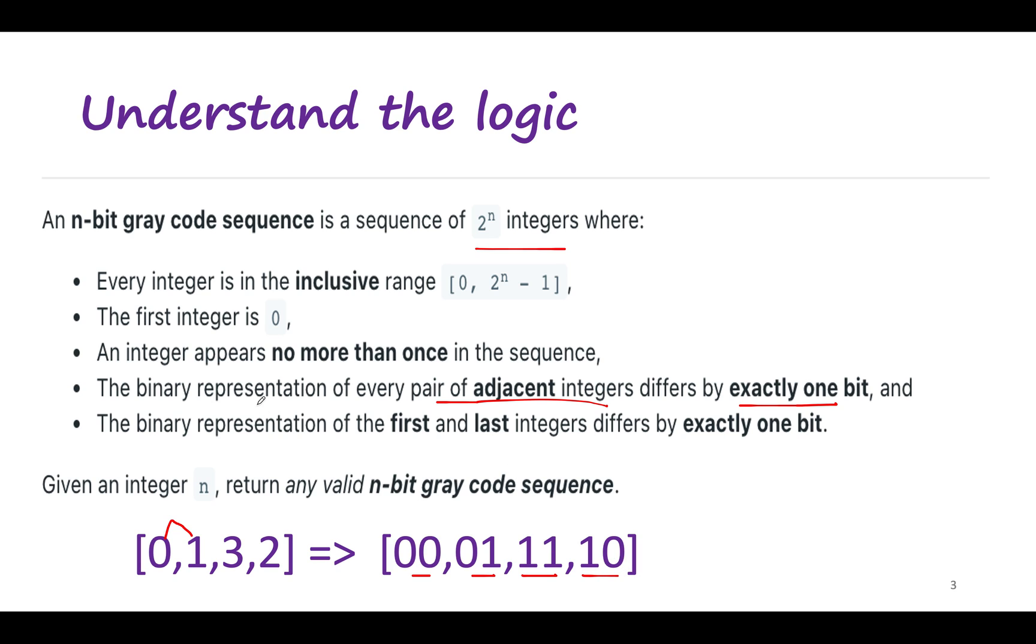Also, the binary representation of the first and the last integer differ exactly by one bit. So this is the first number, this is the last number, and it should differ exactly by one bit. These are two very important constraints that were given in the question. Keep those in mind while thinking about the solution.